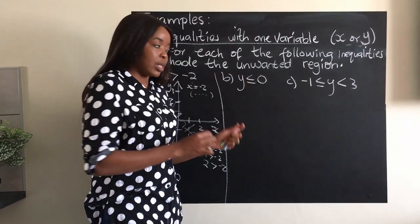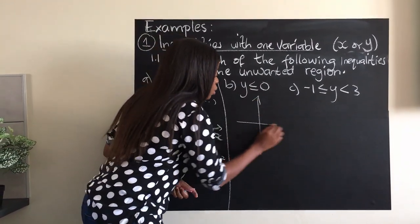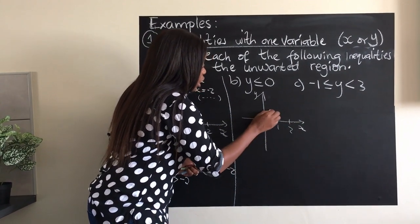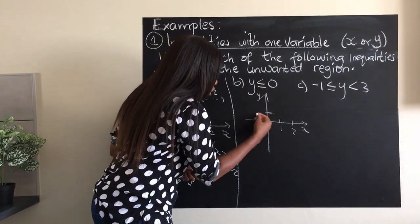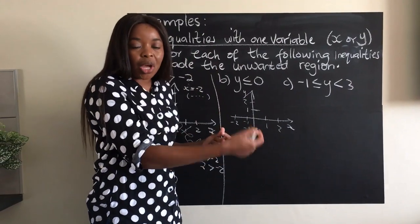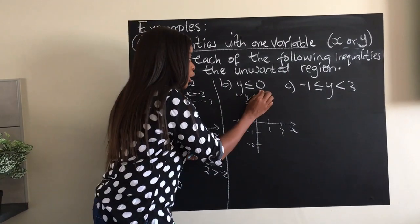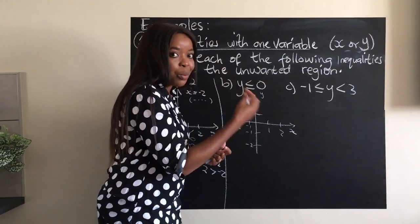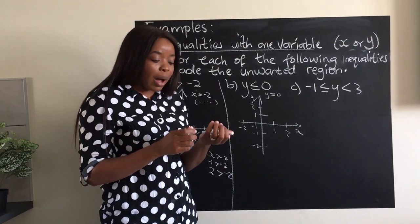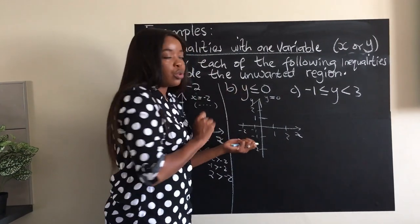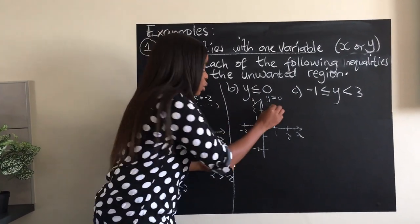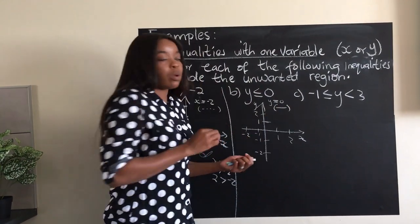That is example (a). Now (b): y is less than or equal to 0. First draw your y-axis and x-axis and label them. We change the inequality to an equation: y equals 0. We ask ourselves: solid straight line or broken line? We see an equal sign is involved, so we use a solid straight line. The line y equals 0 is exactly the x-axis, because on the x-axis, y is 0.